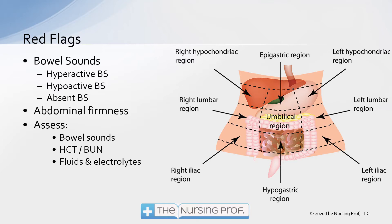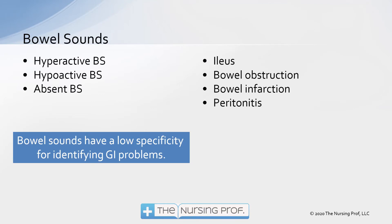Abdominal firmness is another red flag characteristic. We'll also assess bowel sounds, hematocrit in association with BUN, and fluids and electrolytes. Bowel sounds have a low specificity for identifying GI problems because there's a wide variance in people's normal bowel sounds. After eating you'd have very hyperactive bowel sounds; during sleep or early morning hours, very hypoactive bowel sounds. We have to be careful interpreting bowel sounds — they are associated with disease processes but are not very specific for identifying conditions such as an ileus, bowel obstruction, bowel infarction, or peritonitis.